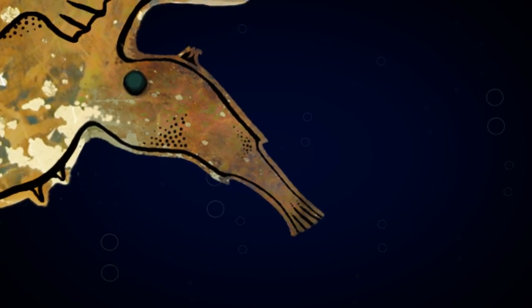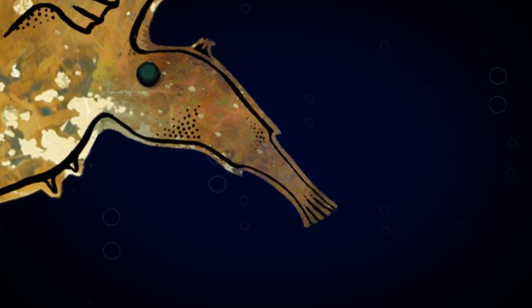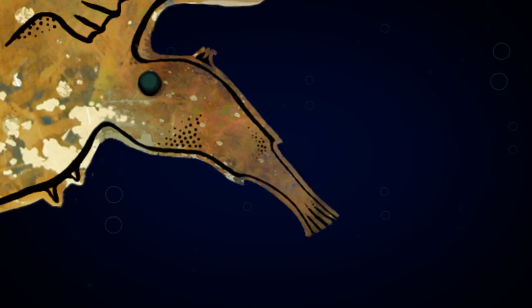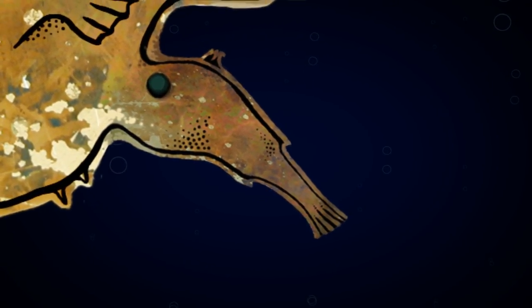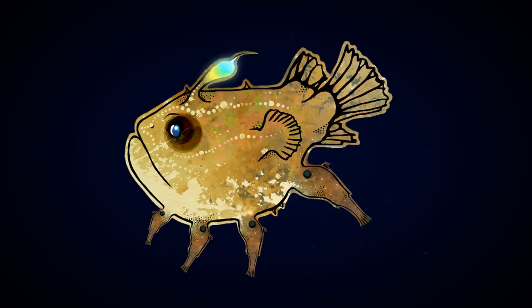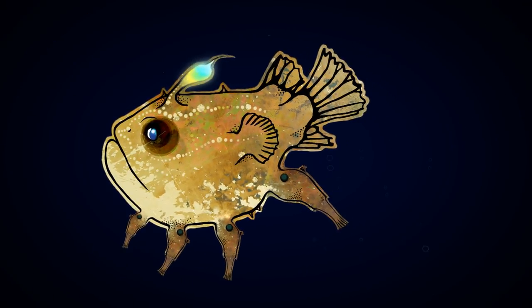This ensures that when the female is ready to spawn, she has a mate immediately available. However, even though Andy thinks he's found his soulmate and has even sacrificed his own identity to woo her, multiple anglerfish males can be incorporated into a single female.